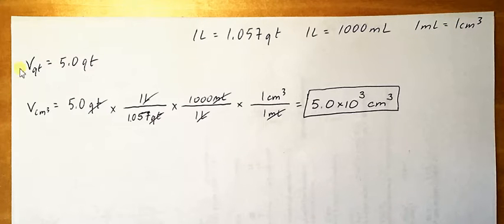So the problem gives you this number in units for the volume in quarts is 5.0 quarts, and you're to convert that to centimeters cubed. So what you're going to want to do is take what's given to you in the problem first and then use each successive conversion factor to cancel out the units that you don't want.